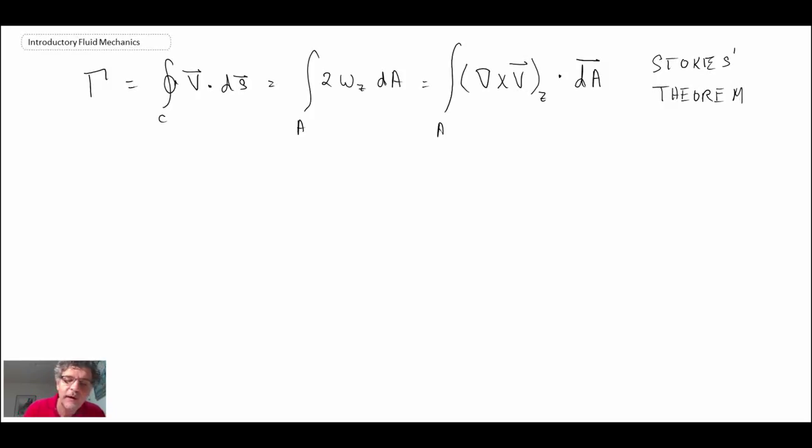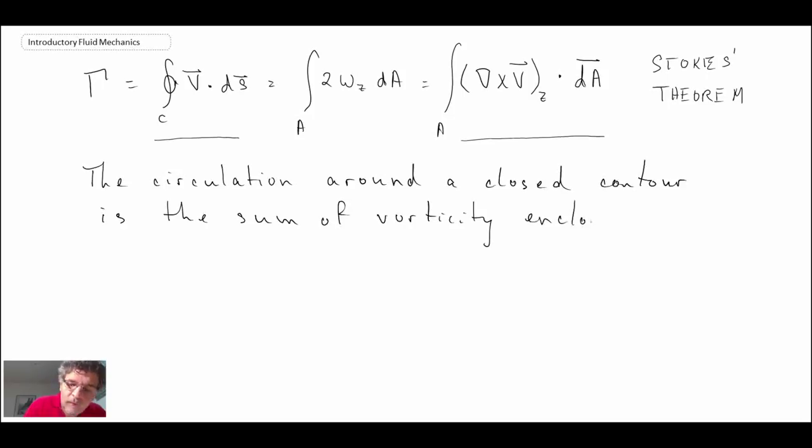And what it does is it relates this line integral to an area integral of the vorticity. So the velocity integral is equal to the vorticity integrated over the area that we're looking at. So what that tells us is that the circulation around a closed contour is the sum of the vorticity enclosed within it. So those two are equivalent to one another.